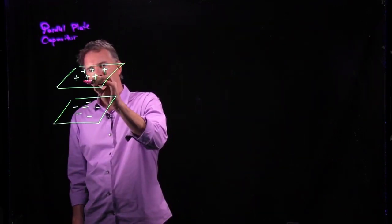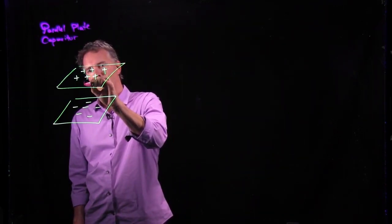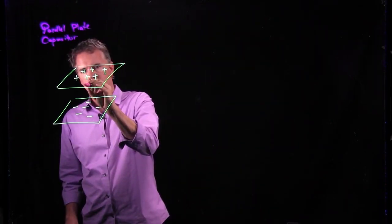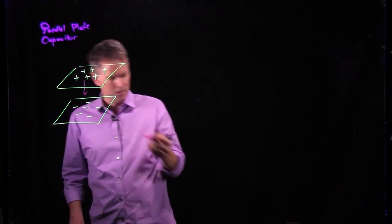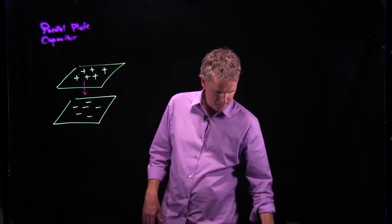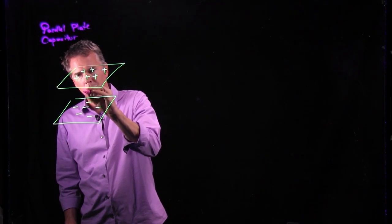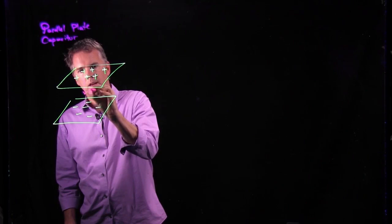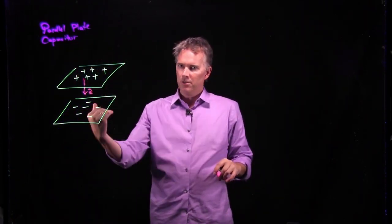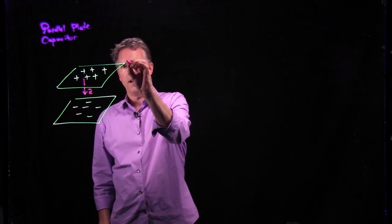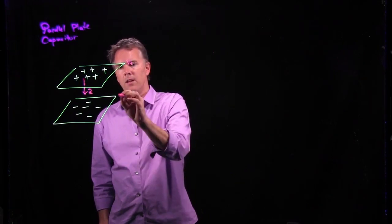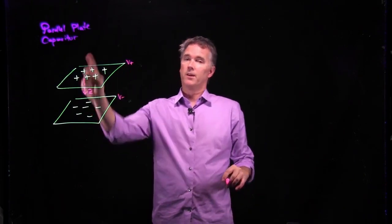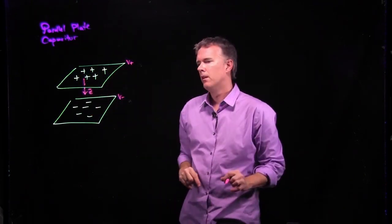We know that electric field must point from top to bottom, right? It leaves positive charge and heads towards, let's refresh this pen here, points towards negative. And that's what my E field looks like. And we also know that there is a potential difference here. This is V plus, this is V minus. The gradient of V goes up, which means the electric field goes down.